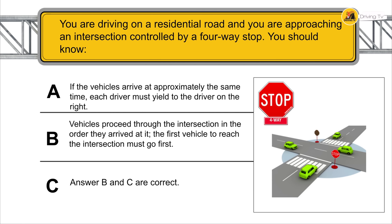You are driving on a residential road and approaching an intersection controlled by a four-way stop. You should know: if vehicles arrive at approximately the same time, each driver must yield to the driver on the right. Vehicles proceed in the order they arrived — the first vehicle to reach an intersection must go first.